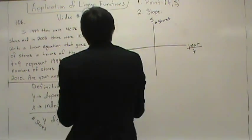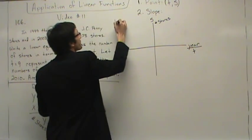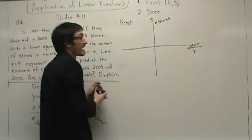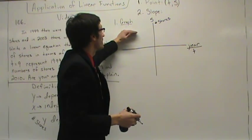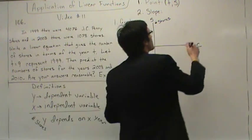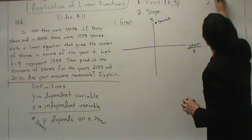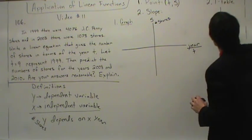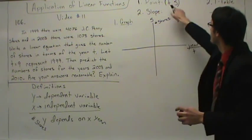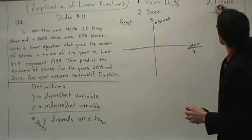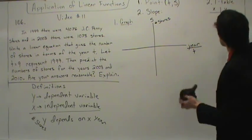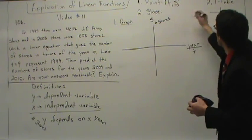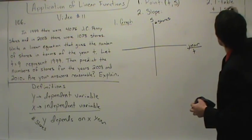Your first step for your homework is to graph. Step two is to set up a T table — another way of writing ordered pairs. So we have T and S. T is our X, S is our Y. We're going to put T and S in our T table.